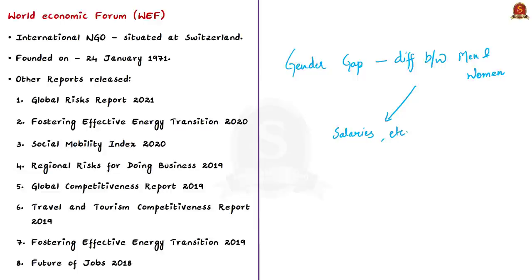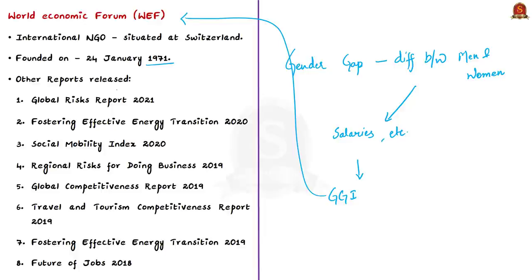This gender gap is measured by the Global Gender Gap Index, which is released by the World Economic Forum. This report is released annually. The World Economic Forum is based in Switzerland and it is an international NGO founded in the year 1971. Apart from this Global Gender Gap Report, WEF also releases several other reports, which are important from a prelims perspective.